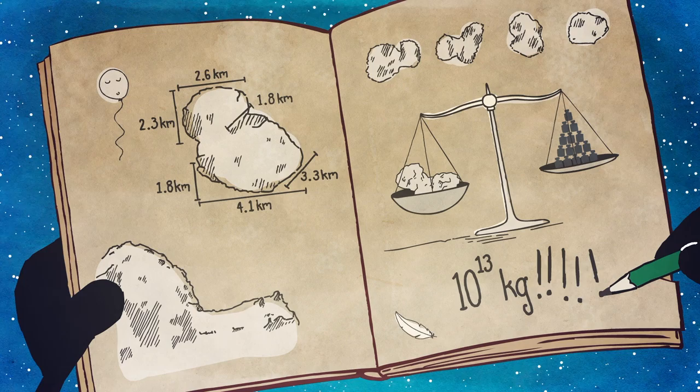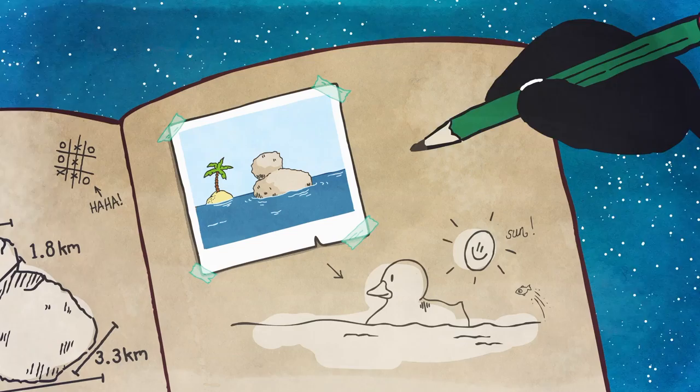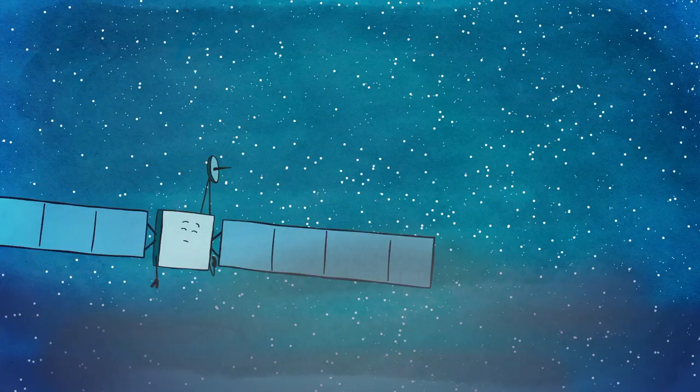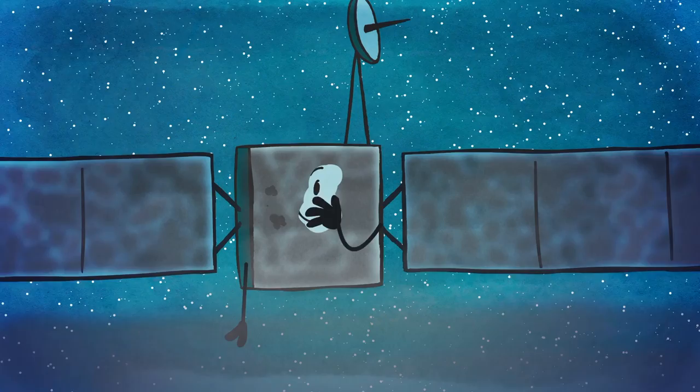Although the comet looked like a giant rock, it was made of something much lighter, so much so that it would float on water. Rosetta collected samples of the gas and dust that streamed into space in order to learn more about what the comet was made of and where in the solar system it was born.